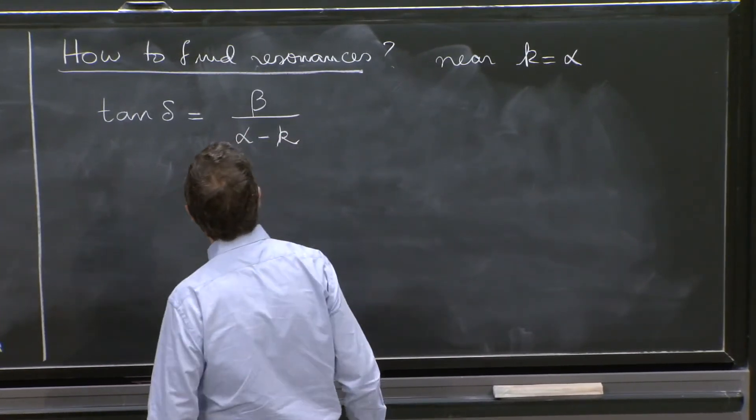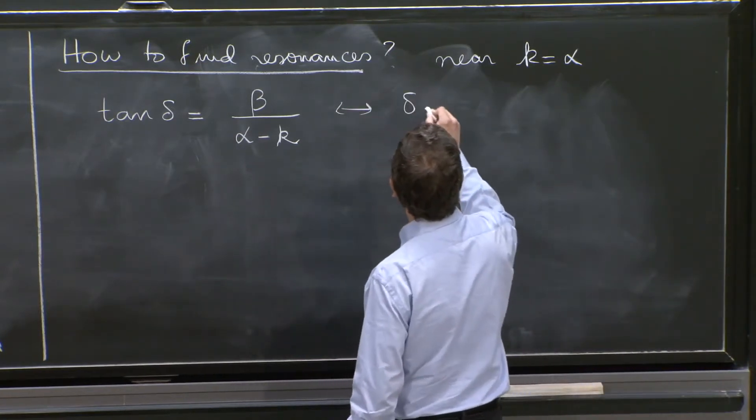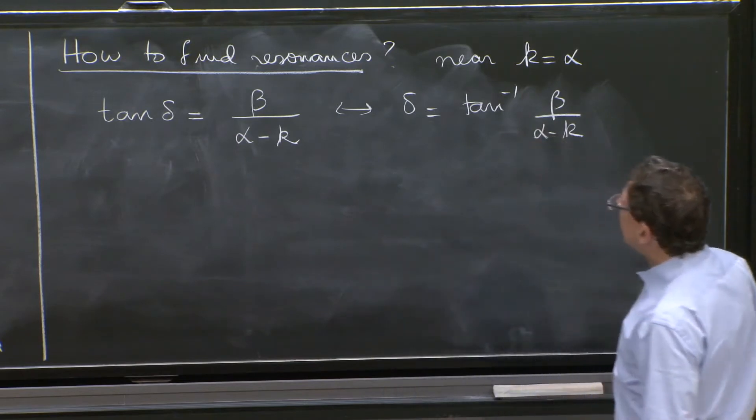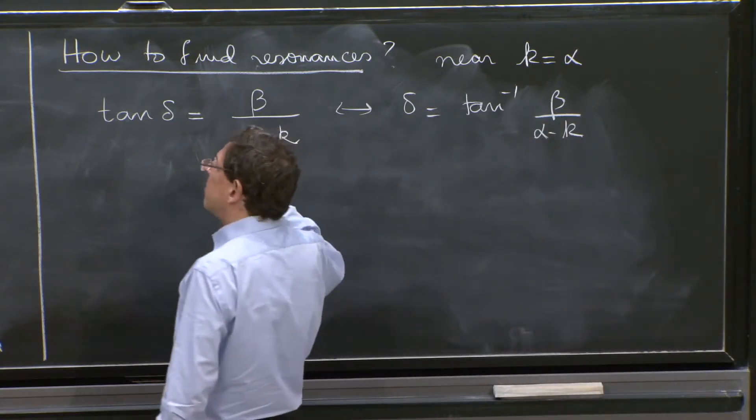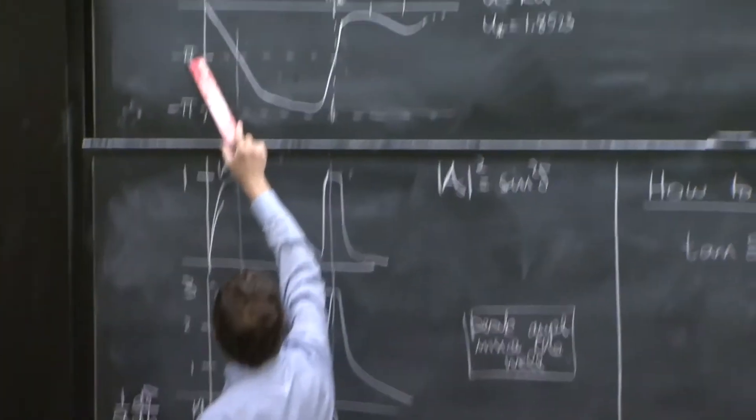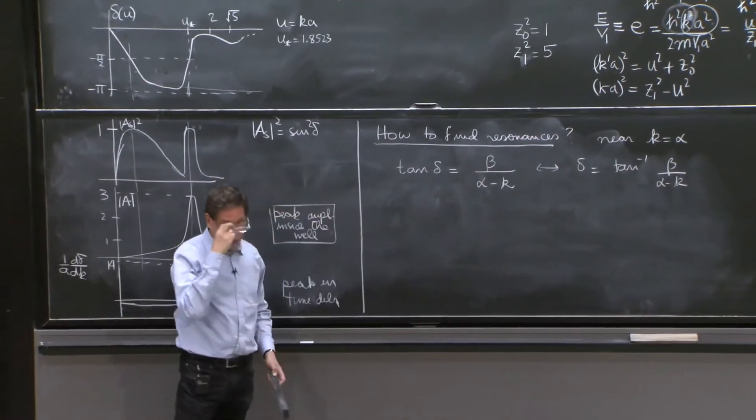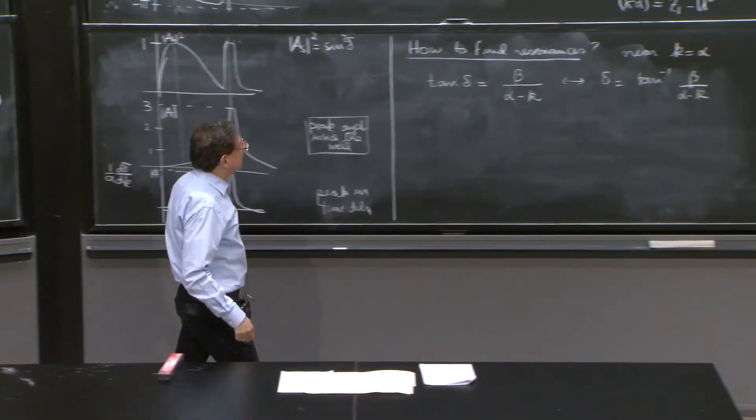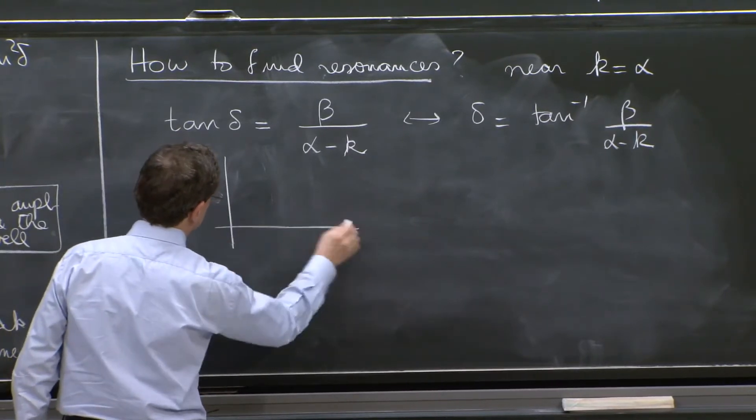Or if you wish, δ is tan⁻¹ of β over α minus k. Why is that reasonable? It's a little surprising, but not that surprising. You see that when δ is equal to minus π over 2, the tangent of δ goes to infinity. So there's something going on here in which you have this property. So let's plot β over α minus k to understand it. We need a plot to understand this.